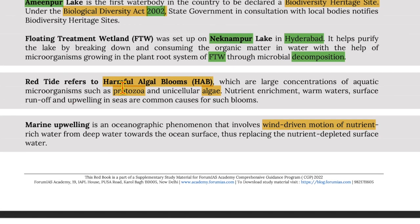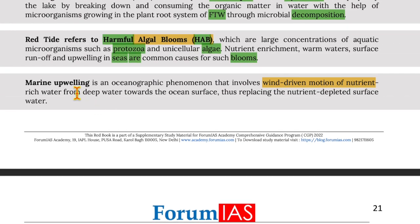Red tide refers to harmful algal blooms — large concentrations of aquatic microorganisms such as protozoa and unicellular algae. Nutrient enrichment, warm water, surface runoff and upwelling in seas are common causes for such blooms. Marine upwelling is an oceanographic phenomenon involving wind-driven motion of nutrient-rich water from deep water towards the ocean surface, replacing nutrient-depleted surface water.